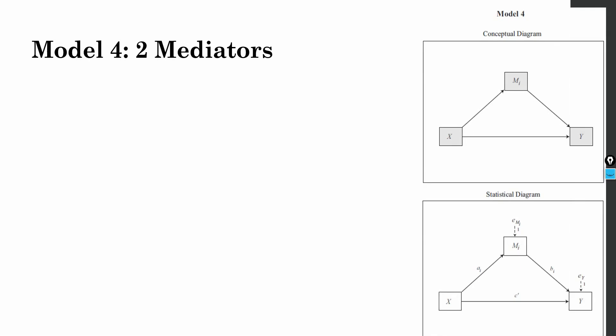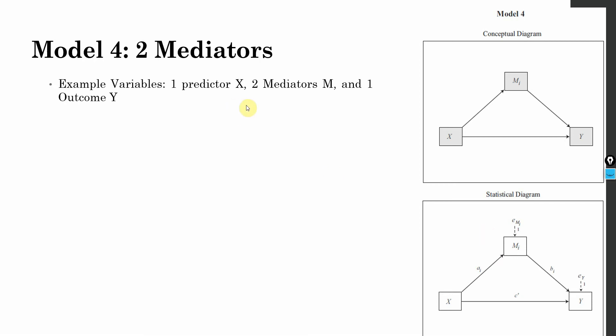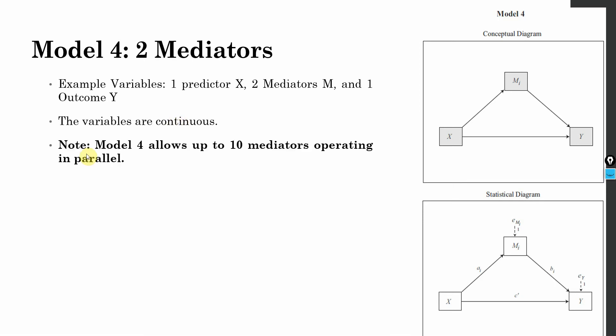In this case, I've got two mediators — here is the conceptual diagram, here is the statistical diagram. I've got one predictor, two mediators, and one outcome variable. The variables are continuous. Model 4 in Hayes Process Macro can allow up to 10 mediators operating in parallel.